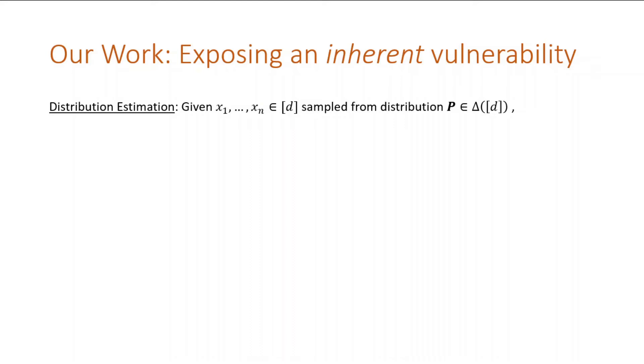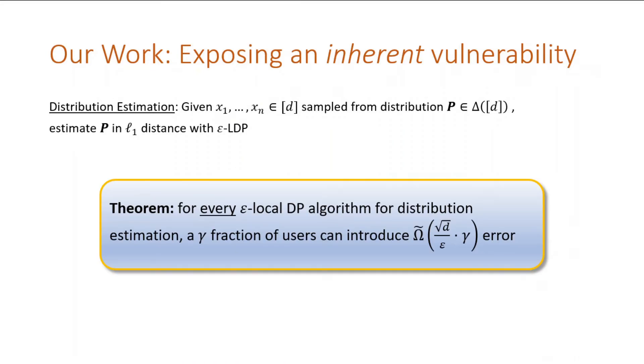The core example is distribution estimation. If we get data from a distribution and we want to estimate it in the L1 norm, corrupt users can introduce error at least as large as square root d over epsilon.